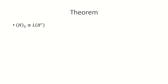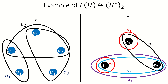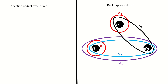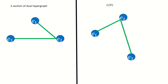By a similar argument, we can show that the line graph of a hypergraph H is isomorphic to the two section of the dual of H. Intuitively, the dual of the dual has the same structure as the original hypergraph, so if we replace H with its dual in our theorem statement, we get that the line graph of that hypergraph is isomorphic to the two section of the dual. As an example, here is the two section of the dual of our last hypergraph, and here is the line graph of the hypergraph — notice that they are isomorphic.